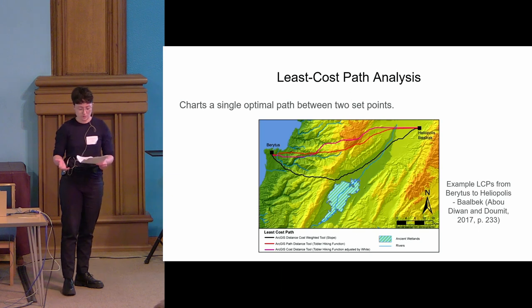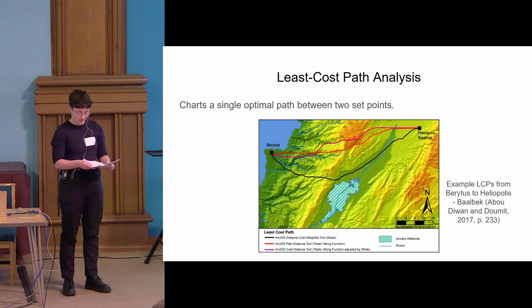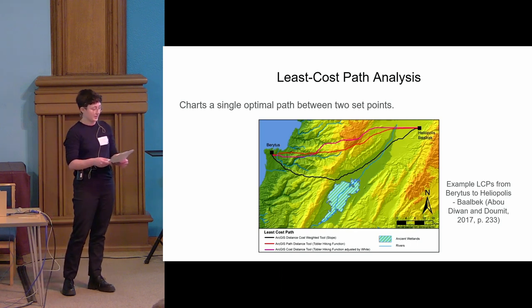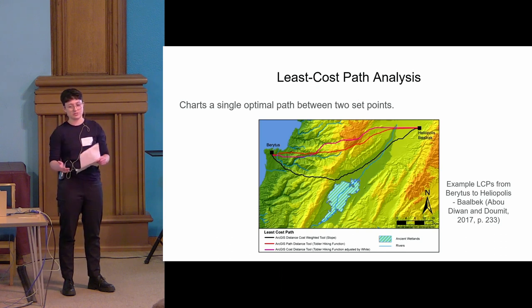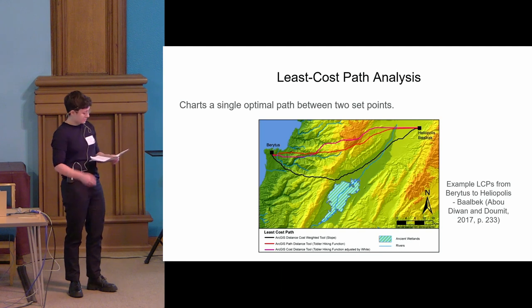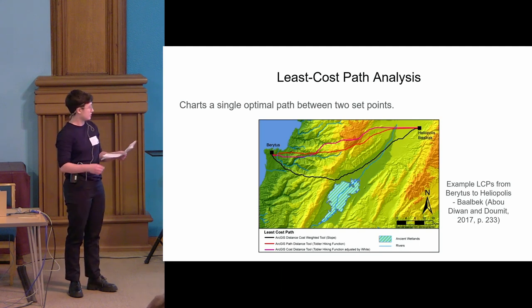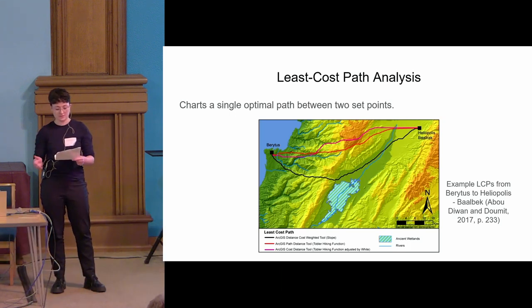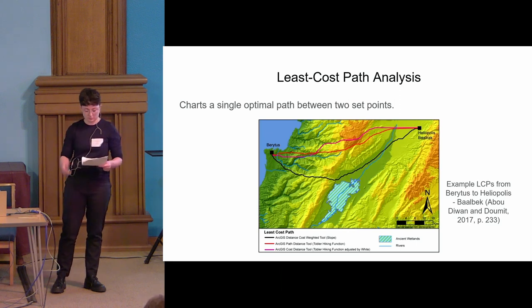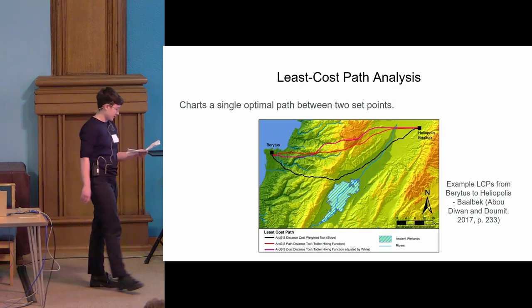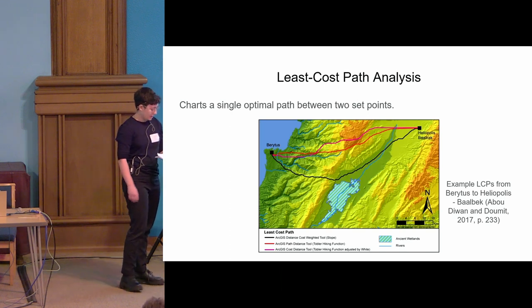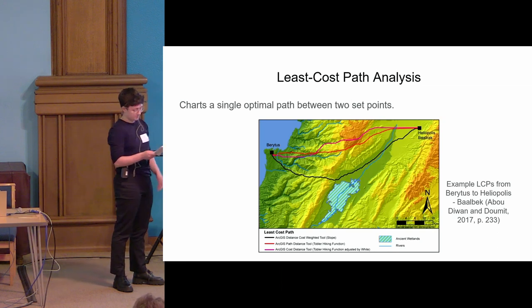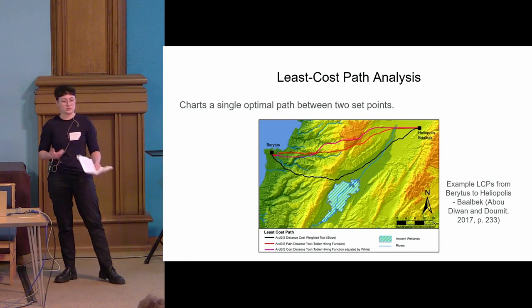Least cost path analysis sets two points — a source and a destination — over a cost surface. A cost surface is essentially a grid raster where every cell contains a cost value defining how difficult or easy it would be to traverse that section of the land or seascape. It calculates the single optimal path of least accumulated cost and presents it as a static line. A good terrestrial example is Abu Diwan and Dumit, who calculate the least cost path from Beirut to Baalbek using slope data.